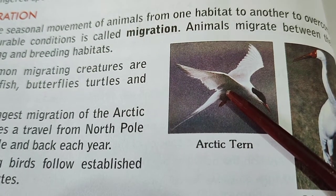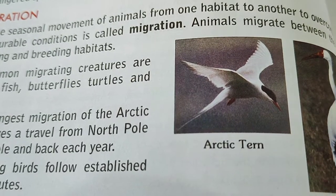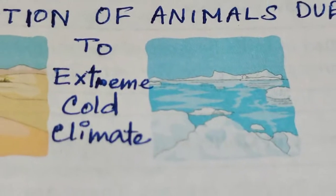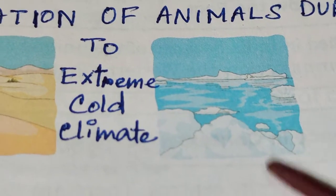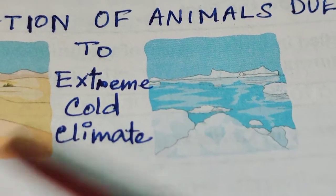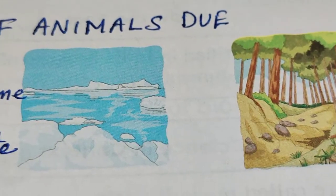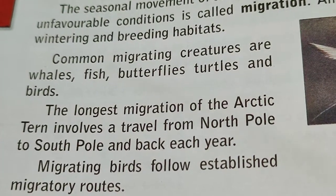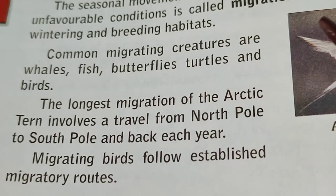During winter time, these animals try to avoid that freezing cold climate, so they migrate from extreme cold climates to comparatively less cold areas. Common migrating creatures include whales, fish, butterflies, turtles, and birds.